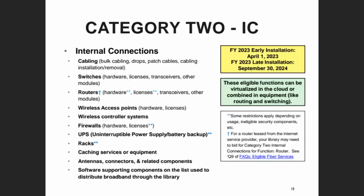For some of these items I put asterisks to indicate there may be an eligibility situation to consider, particularly with routers, firewalls, battery backups, and racks. For routers and firewalls, those extra security features you need on a modern network are not eligible for E-Rate discounts. E-Rate is all about trying to get basic access to your system. So if you've got features involving anti-malware, anti-intrusion, anti-virus, VPN, or any of those extra security things, those are not actually E-Rate eligible.